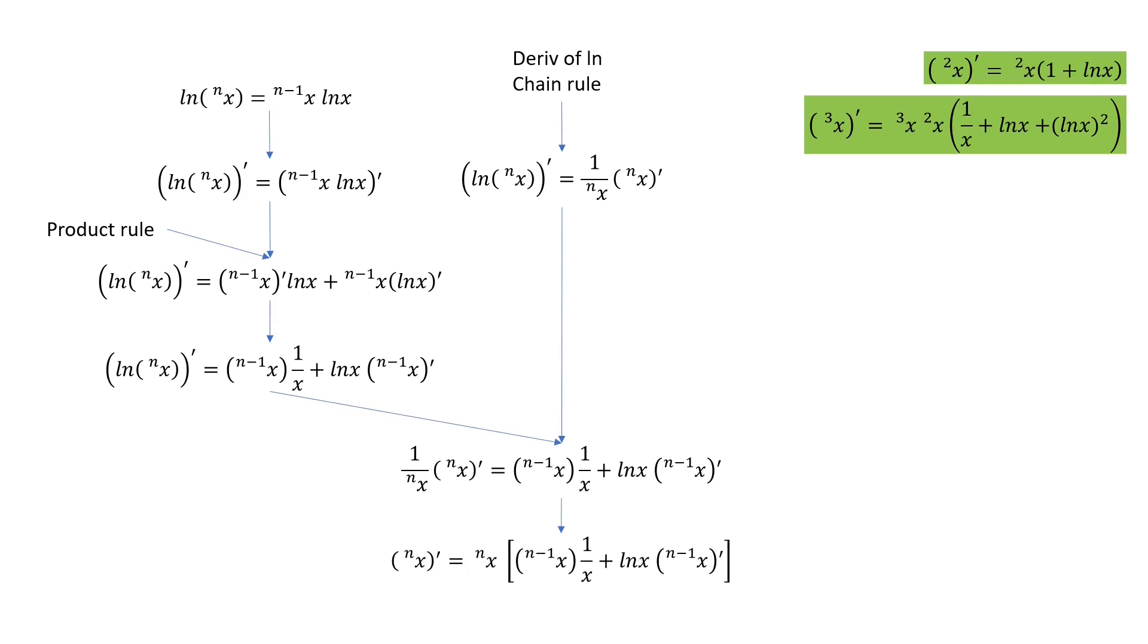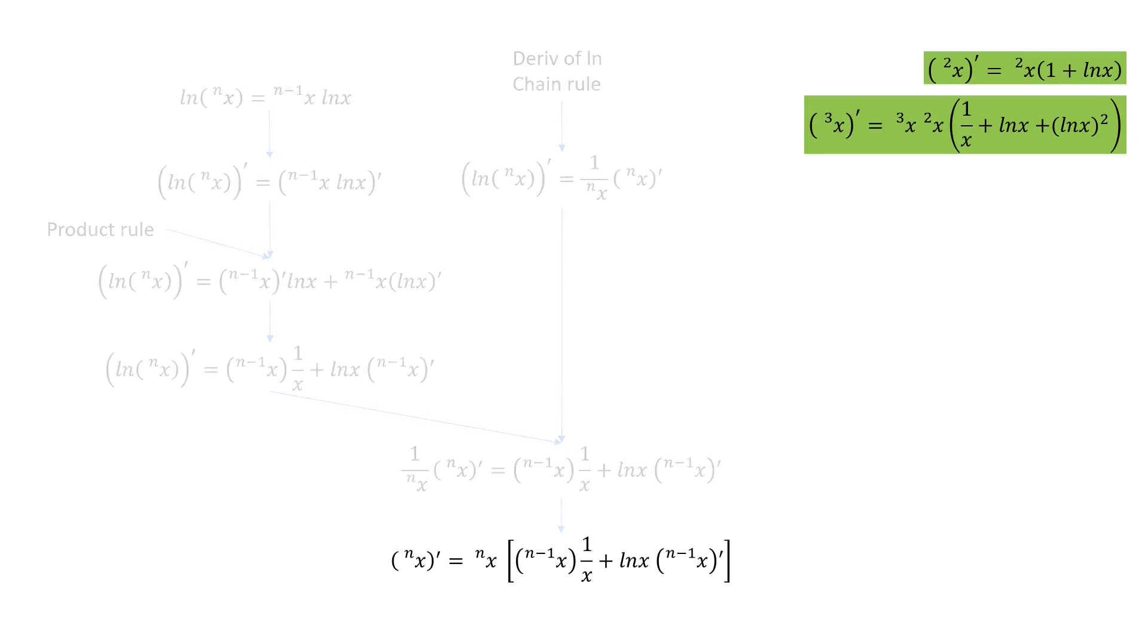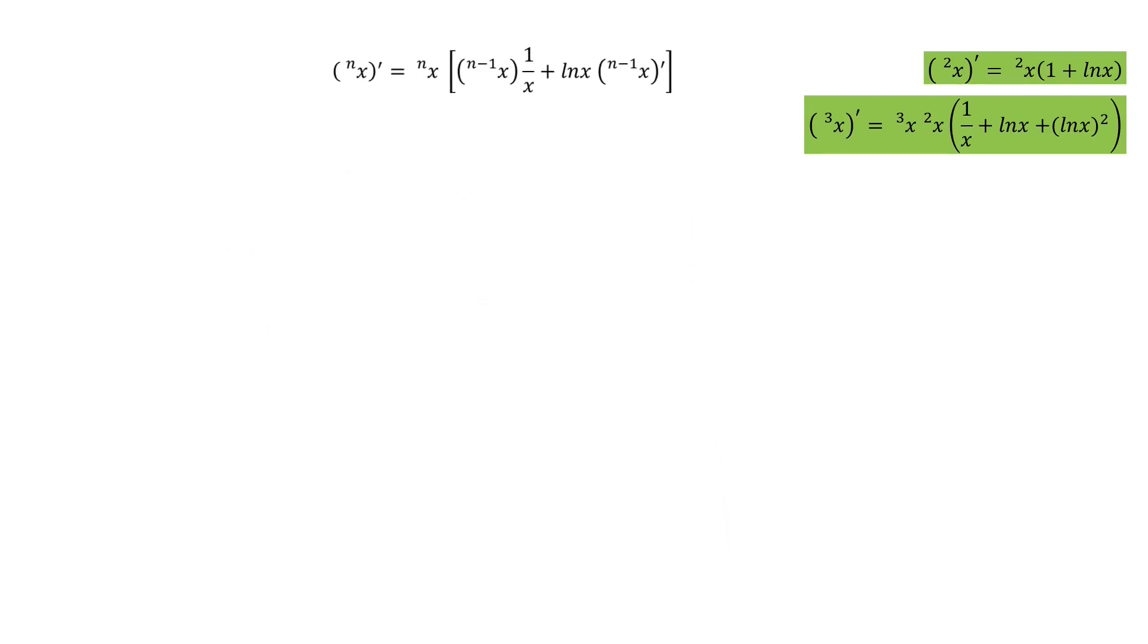And multiply both sides by the main function as before. This intermediate result expresses the derivative of the nth tetration of x in terms of the derivative of the n minus 1th tetration of x.